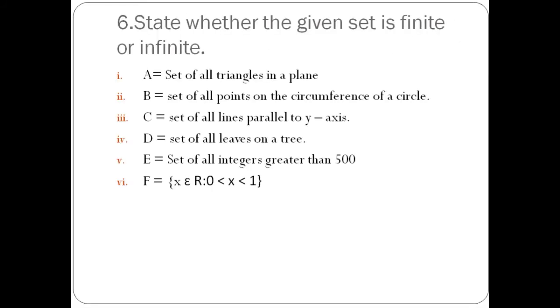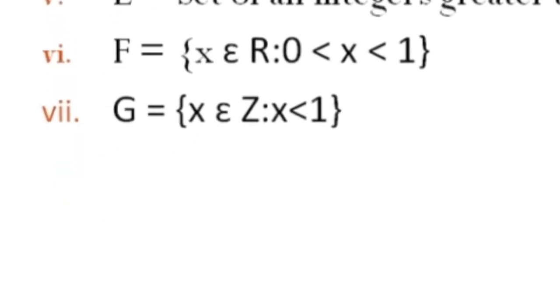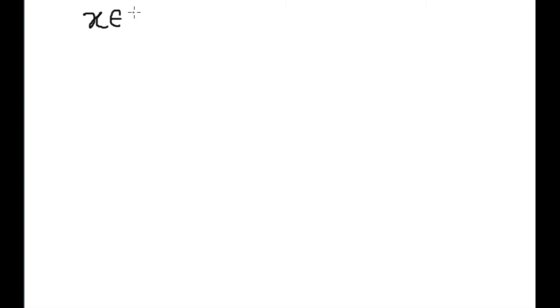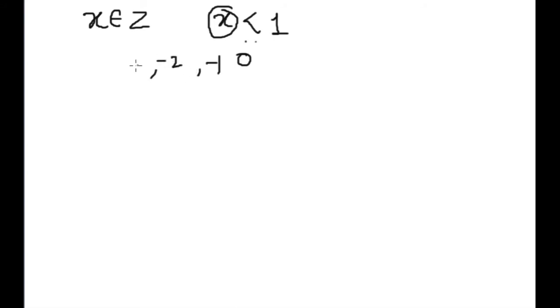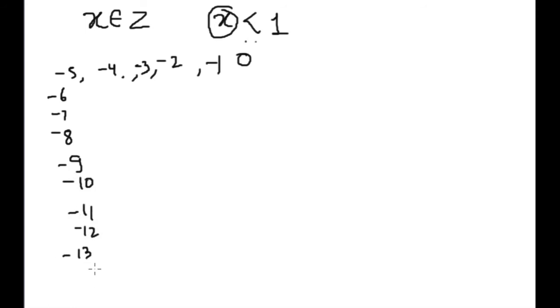Set G is the set of x where x is an integer and x is less than 1. Less than 1 includes 0, minus 1, minus 2, minus 3, minus 4, minus 5, minus 6, minus 7, minus 8, minus 9, minus 10, minus 11, minus 12, minus 13 — and this process will never stop. This goes up to minus infinity. So this is also an infinite set.